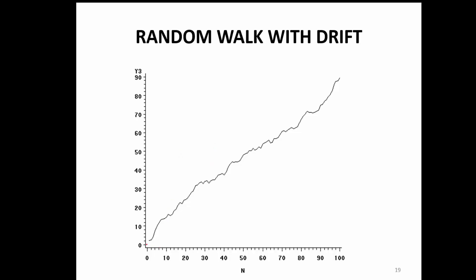The series does not start from 0 — it starts somewhere defined by the drift theta-naught — and then there is no trend at all. So it has some deterministic part and some stochastic part. This is a typical case of random walk with a drift.